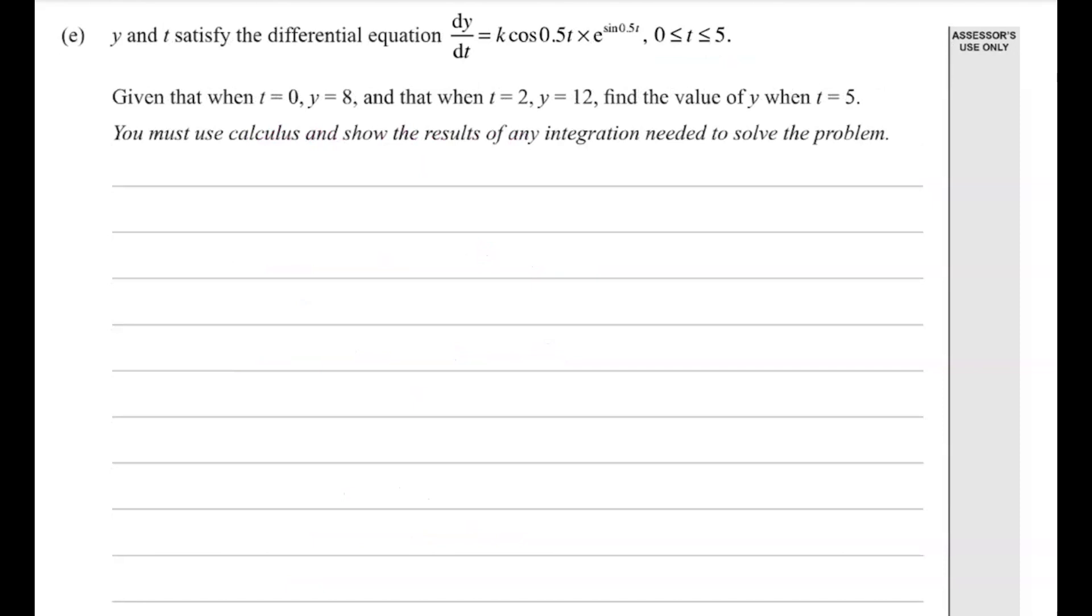And finally, for part e, we are working out this differential equation. The end point is find the value of y when t equals 5. So we need an equation that's y equals something. So to get that, we need to integrate this function up here. So we can get y equals. Now to integrate this, recognize that this part at the beginning is the derivative of this part up here in the e.